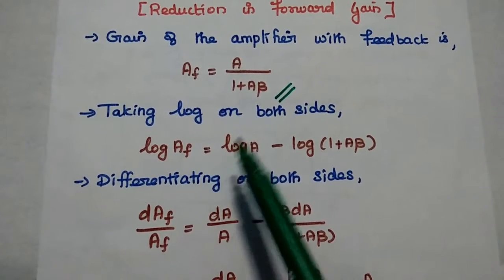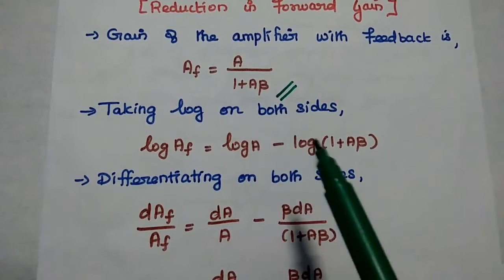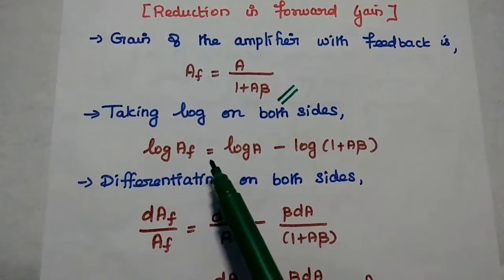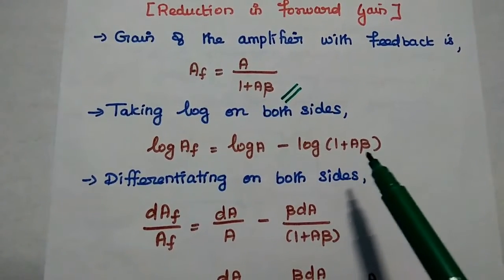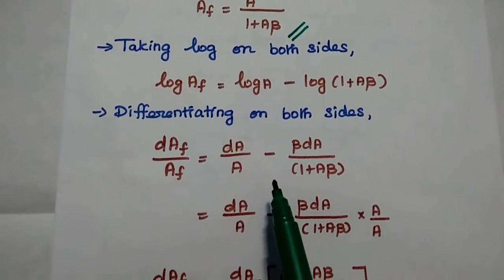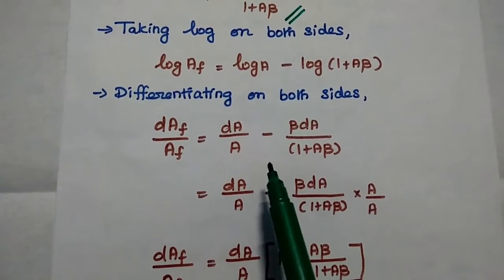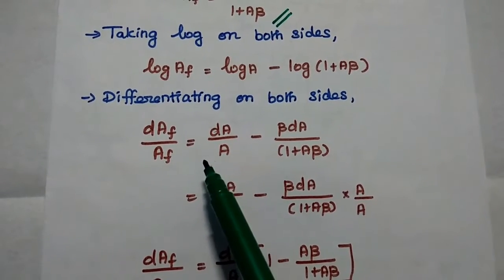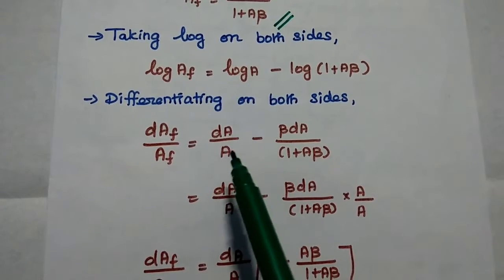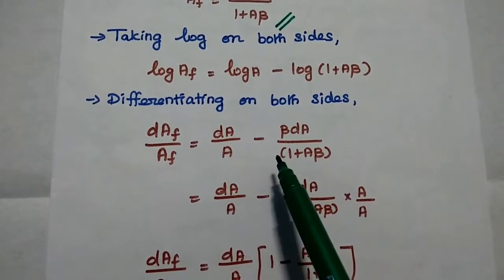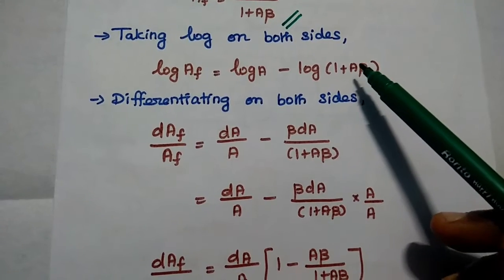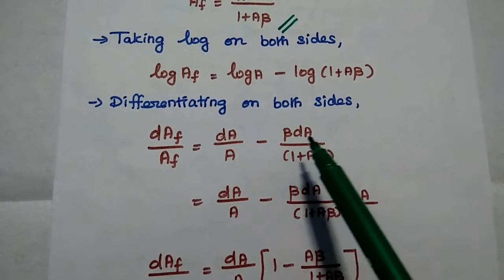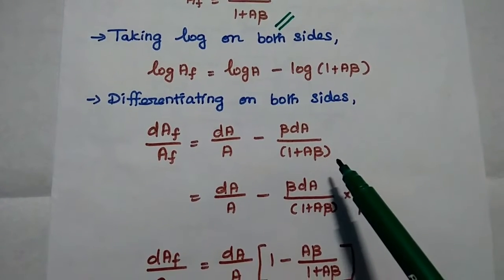We take the log on both sides: log Af equals log A minus log(1 plus A·beta). Next we differentiate both sides. The differentiation gives dAf/Af equals dA/A minus beta·dA divided by (1 plus A·beta), treating beta as a constant.